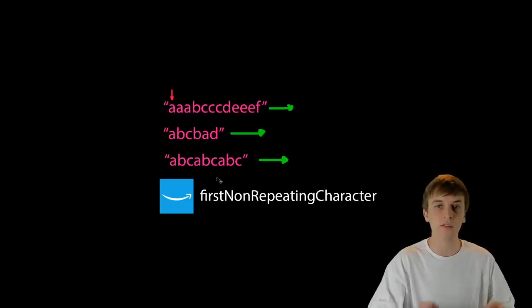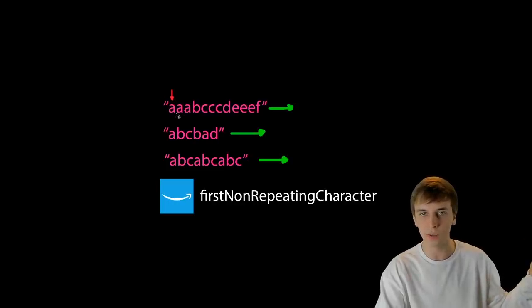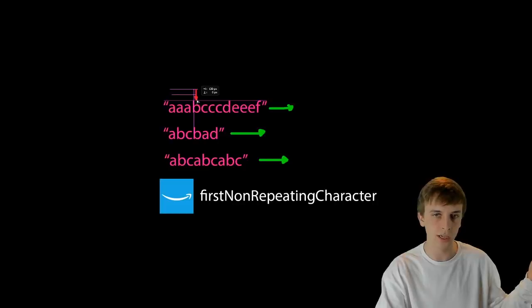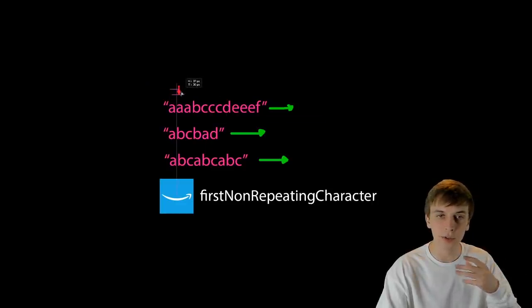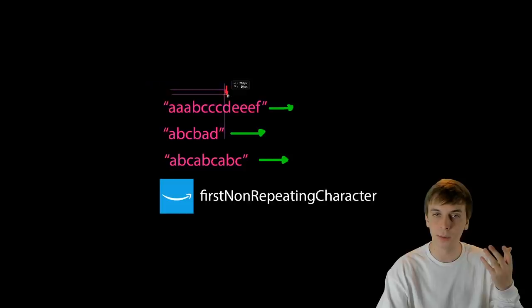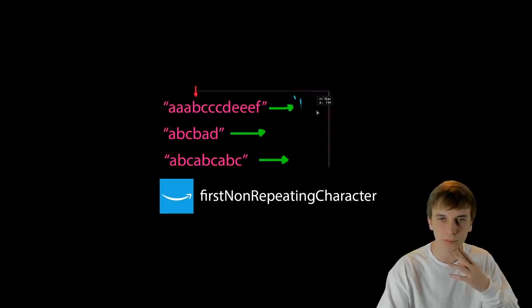Our objective is to find the first non-repeating character in the given string — meaning that character appears only once. For example, if there are three a's, three c's, and three e's, those are repeating. But b, d, and f each appear only once. Since we want the first one, and b comes first in the string, the answer is b.